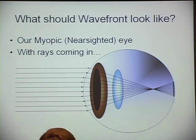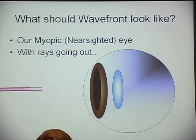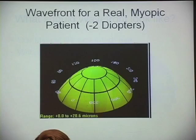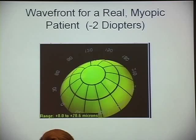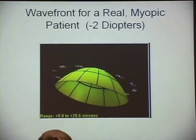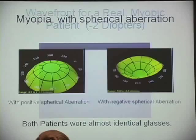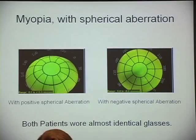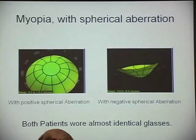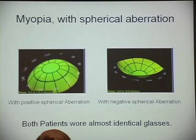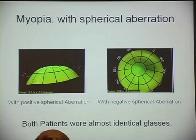What do we expect those wavefronts to look like? For a nearsighted person, we put in light and measure the rays as they come out, and we expect a curved wavefront. This is a measurement from a patient with about two diopters of nearsightedness — mild, just about the cusp of when you'd need glasses. Here are two more people who both have about two diopters of myopia — essentially wearing the same glasses — but one has significant positive spherical aberration and the other has significant negative spherical aberration. Even though the same lens is the best fit, they'll have a substantially different viewing experience.